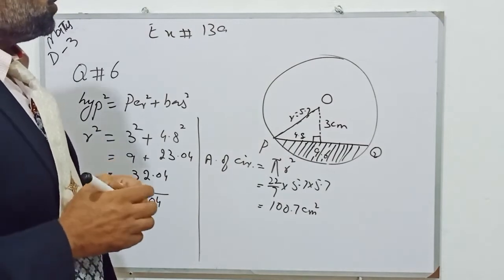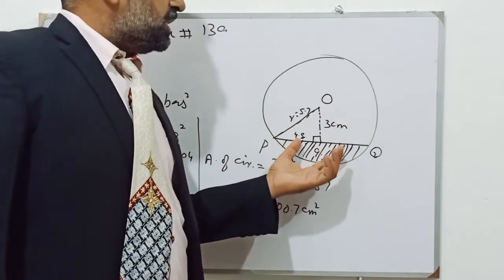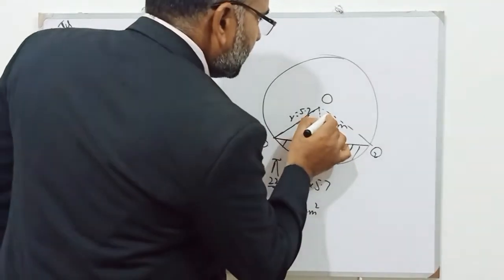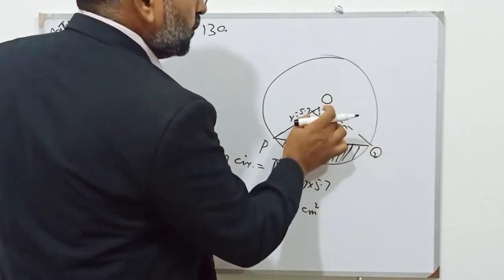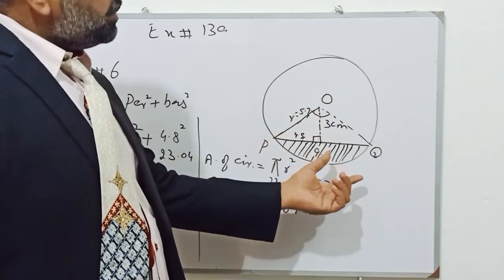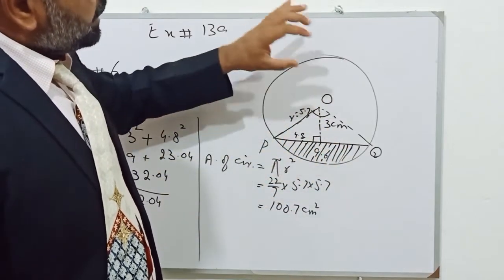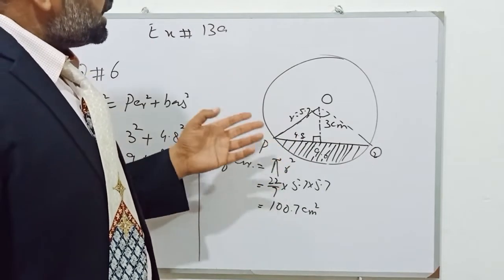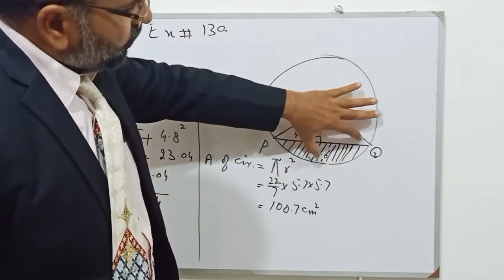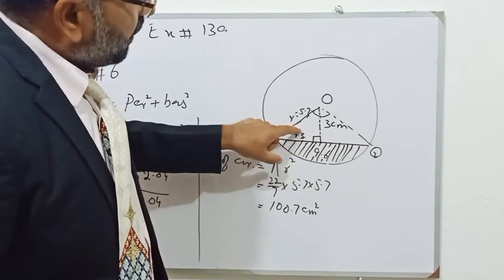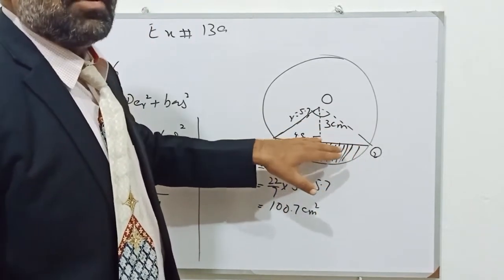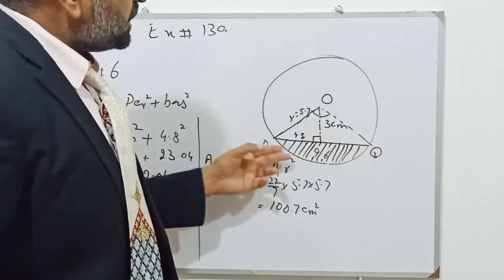Here students, I want to tell you one more thing. If you are asked to find the area of the shaded region, then first you have to find the angle POQ, then use the formula of sector: angle over 360 multiplied by r square. After finding the area of that sector, subtract the area of the triangle from the sector, and you will get the cross-sectional area of the water. But in this question, we are asked to find the cross-sectional area of the circle.